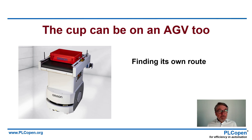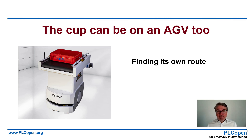Of course, the cup does not have to be on a transportation belt. It can be on an AGV — an automatic guided vehicle. With that, it can make its own tour through the production plant and visit the different workstations. It's a different concept in that sense, but it works too. It can find its own route.